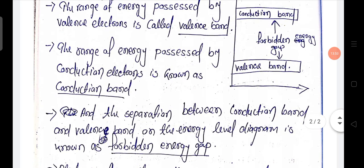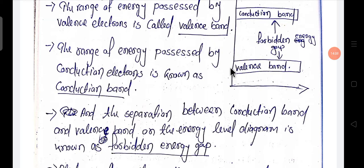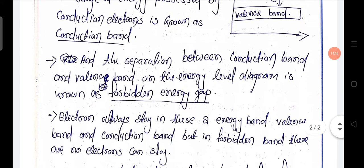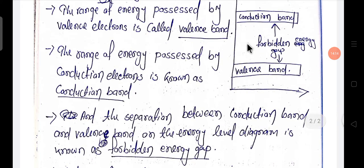In the case of an insulator, the valence band is full and the conduction band is nearly empty — all of the electrons are in the valence band. The forbidden gap varies according to the semiconductor material.